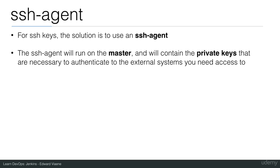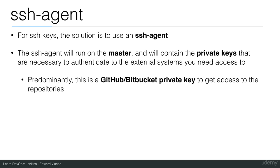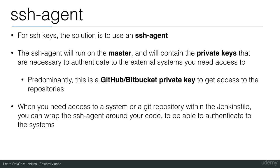The SSH agent will run on the master and will contain private keys necessary to authenticate to the external systems you need access to. Predominantly this is a GitHub or BitBucket private key to get access to repositories. When you need access to a system that uses SSH keys or a git repository within the Jenkins file, you can wrap the SSH agent around your code to authenticate to those systems.